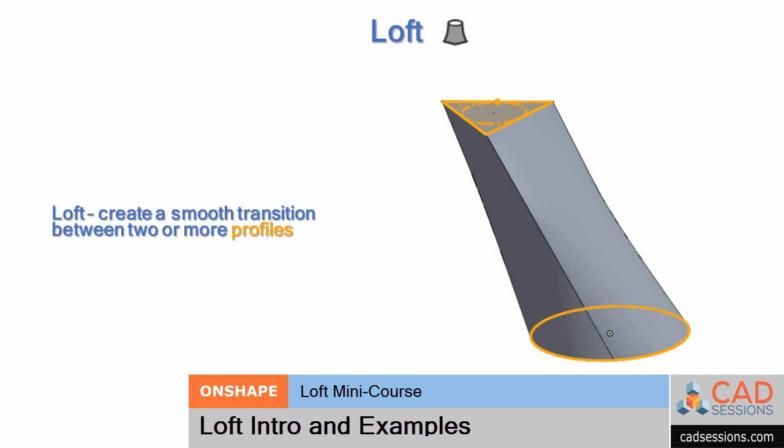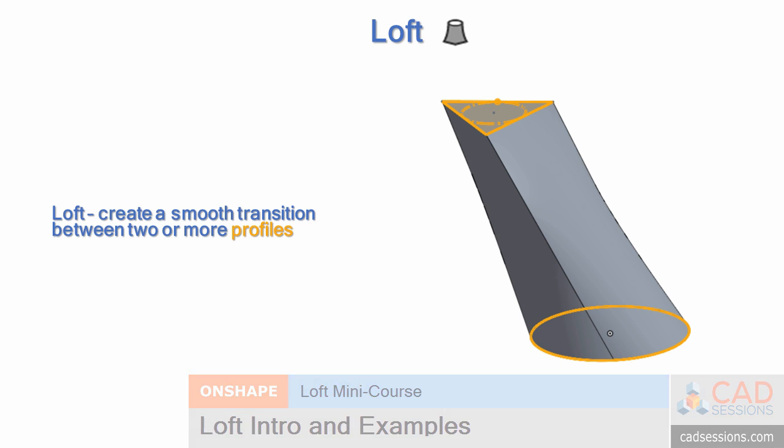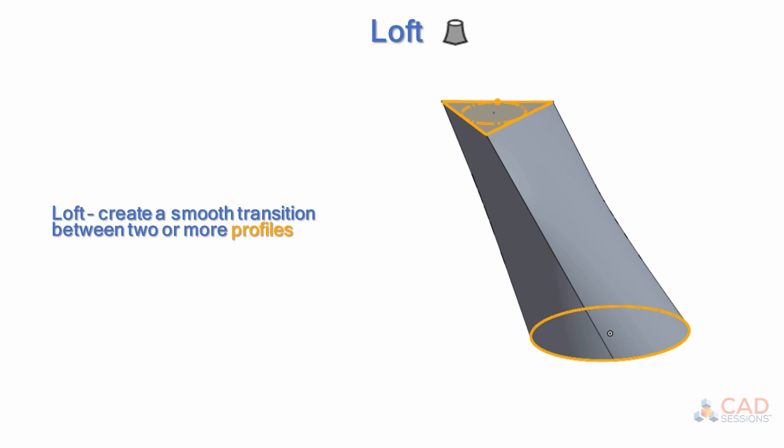The Loft command really opens you up to a whole new world of shapes that you can create, where in this case, it's safe to be cliché and say your imagination is the limit. In its simplest form, with Loft, you can create a smooth, solid transition between two or more profiles. Here, a smooth transition is created between a circle and a triangle.